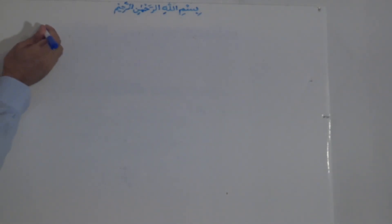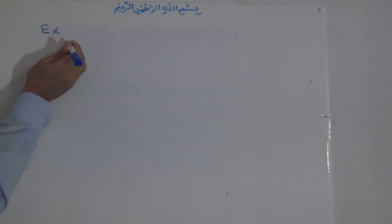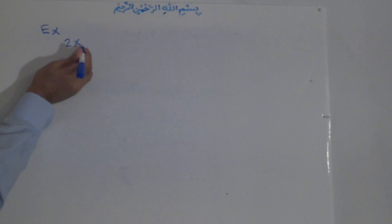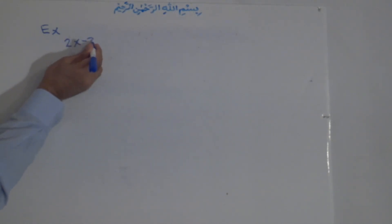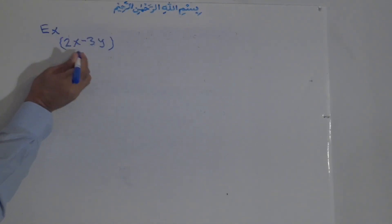Now to show how we use identity number two, I will solve one or two examples. Example number one: 2x minus 3y, to the power of two.